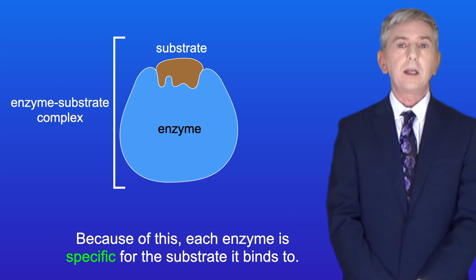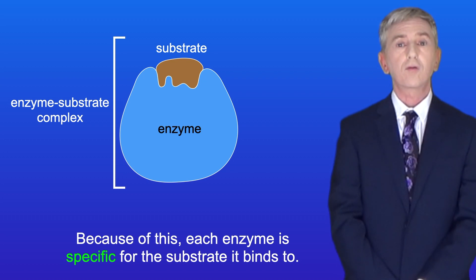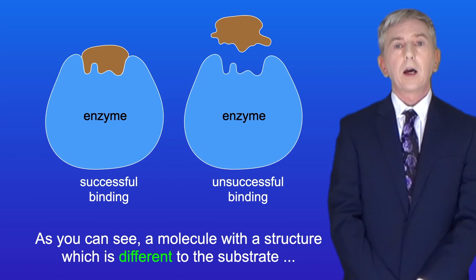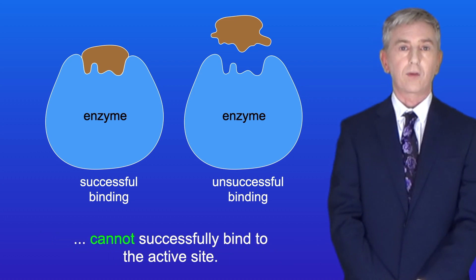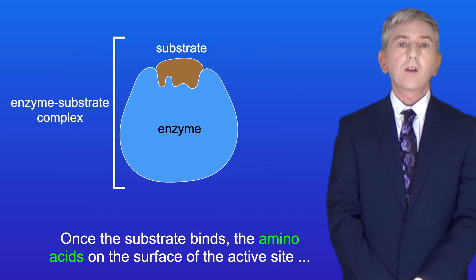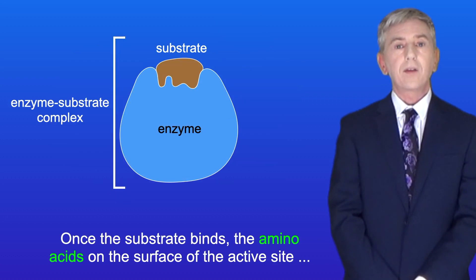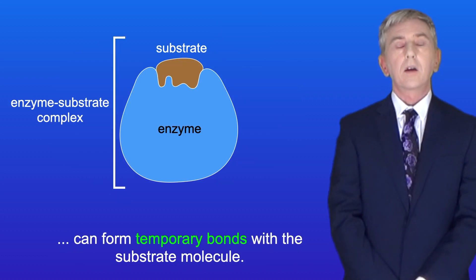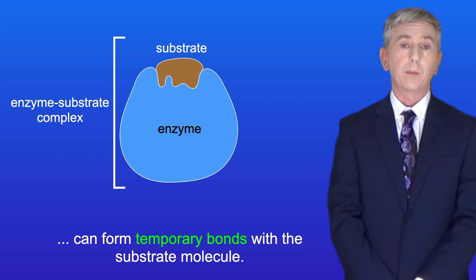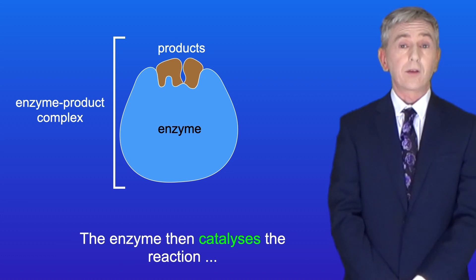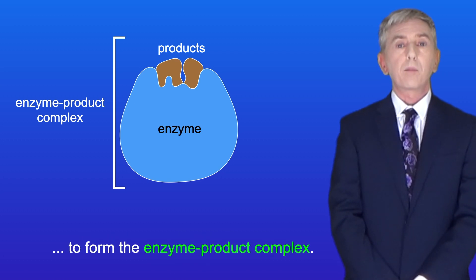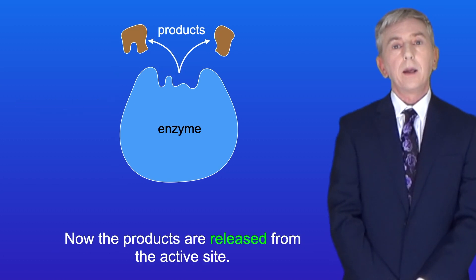Because of this, each enzyme is specific for the substrate it binds to. As you can see, a molecule with a structure different to the substrate cannot successfully bind to the active site. Once the substrate binds, the amino acids on the surface of the active site can form temporary bonds with the substrate molecule. The enzyme then catalyses the reaction to form the enzyme-product complex, and the products are released from the active site.